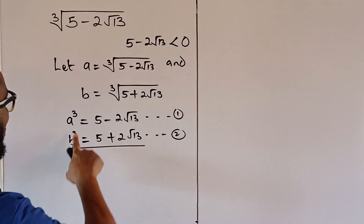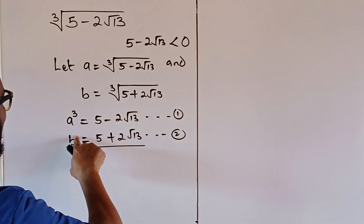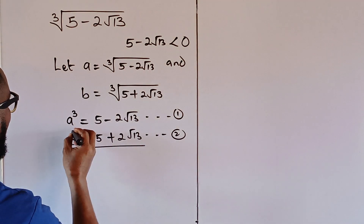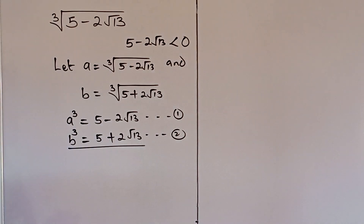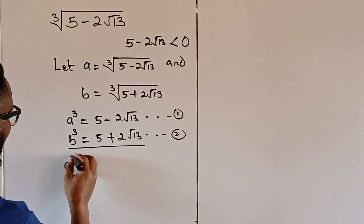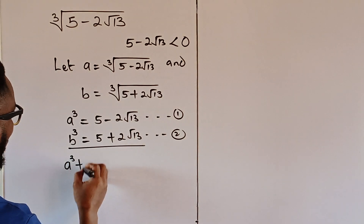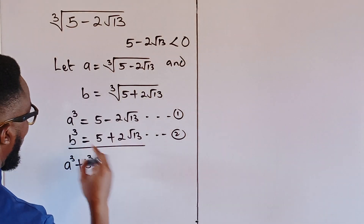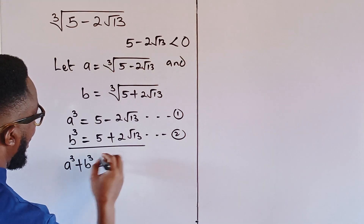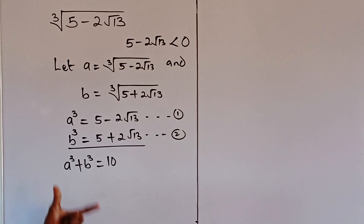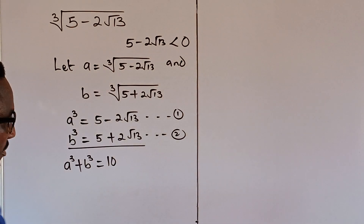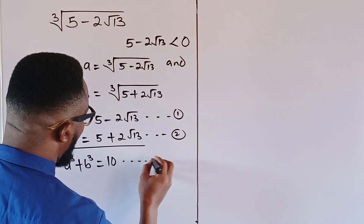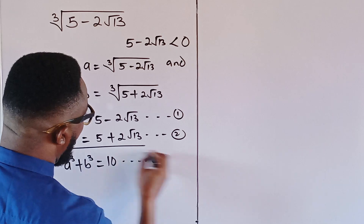We add these two equations together. We get A cubed plus B cubed equal to 5 plus 5, which is 10. The radicals cancel out. We call this equation 3.